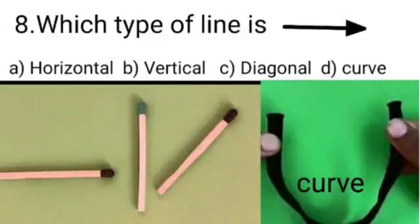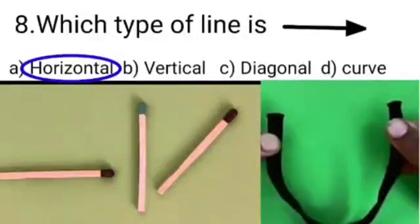So dear students, like this the given line is horizontal line, which is our option A. So we will put a tick on option A.